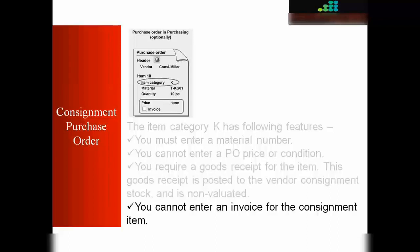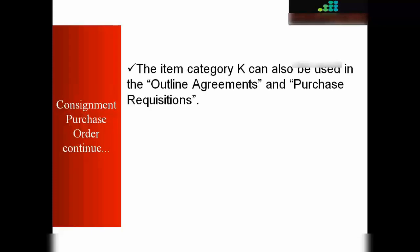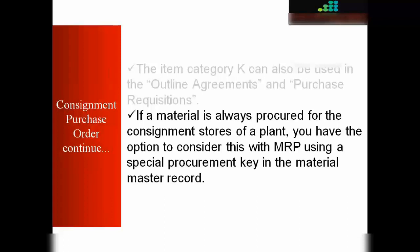You cannot enter an invoice for a consignment item — the MIRO transaction used for standard invoicing is not used for consignment. The invoicing and settlement process is completely different and I'll show it in another topic. Item category K can also be used in outline agreements and purchase requisitions. If a material is always procured for consignment, the requisition will automatically carry item category K.